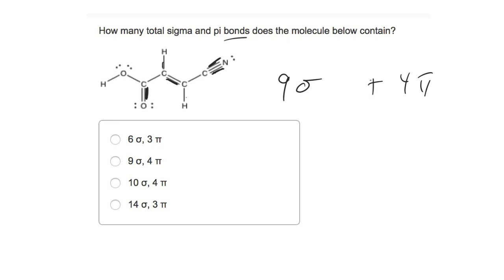If you forget whether it's 2 sigma + 1 pi or 1 sigma + 2 pi for a triple bond, just think about how the bonding works. The C and N atoms are sp hybridized, leaving behind two p orbitals that make two pi bonds. So the two unhybridized p orbitals in those atoms make the two pi bonds.